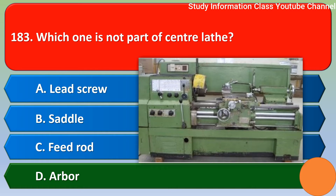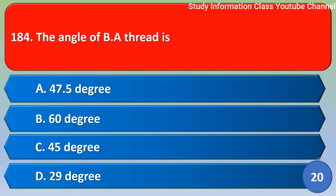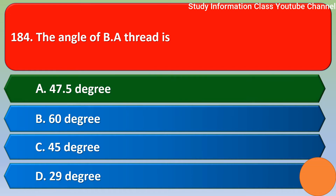Next question: the angle of BA thread is — option A 47.5 degree, option B 60 degree, option C 45 degree, option D 29 degree. The correct answer is option A — 47.5 degree.